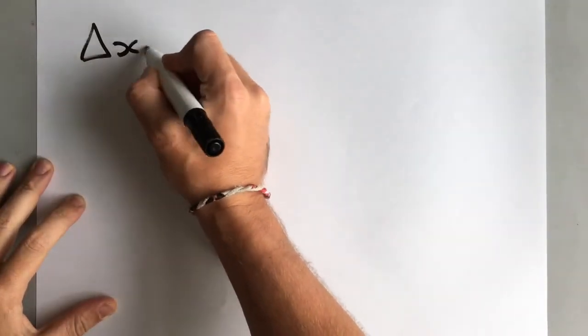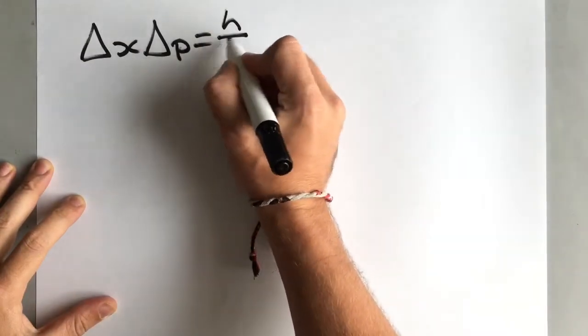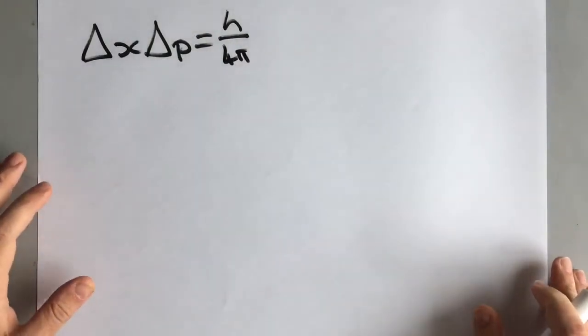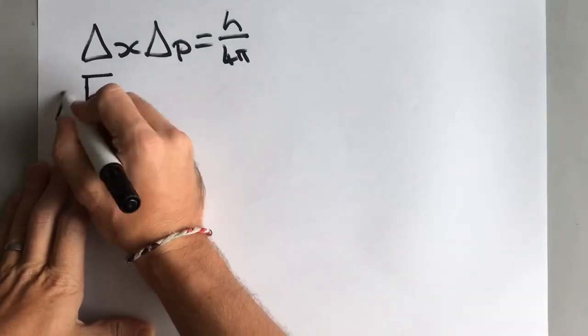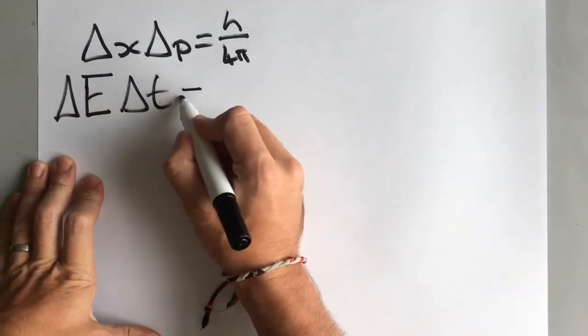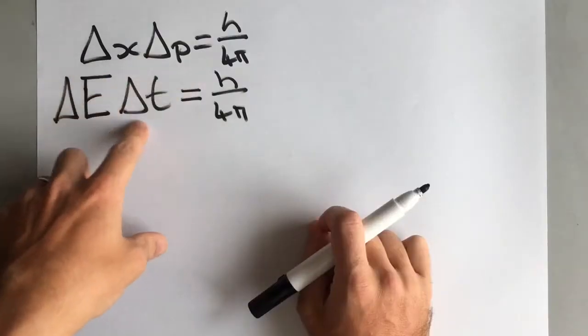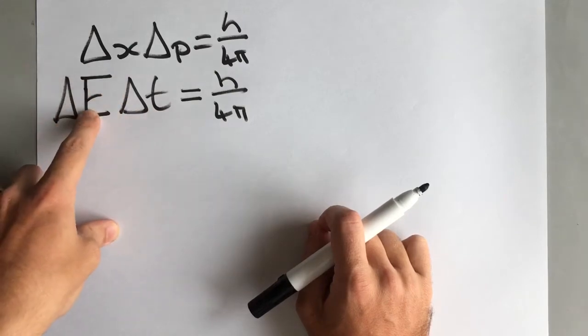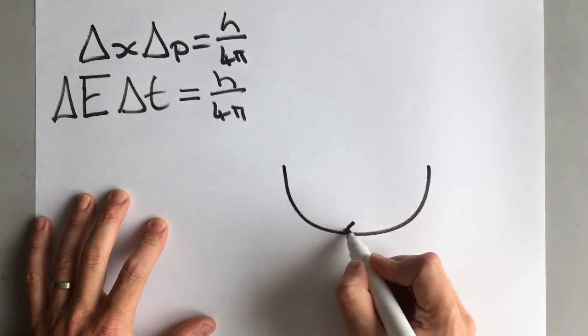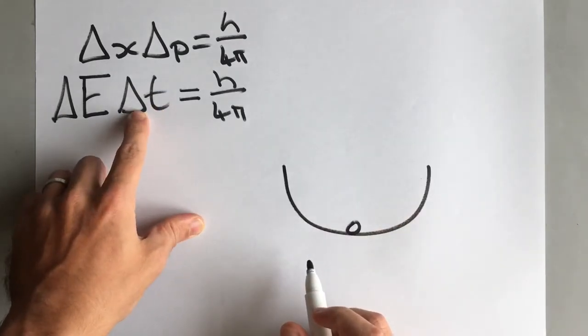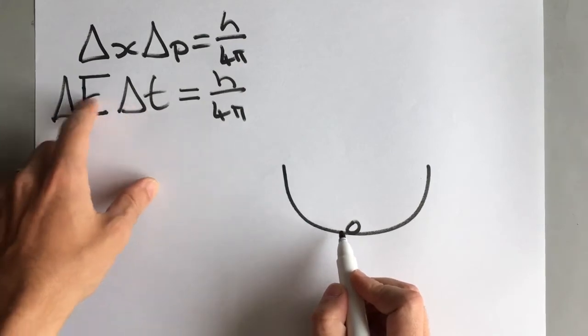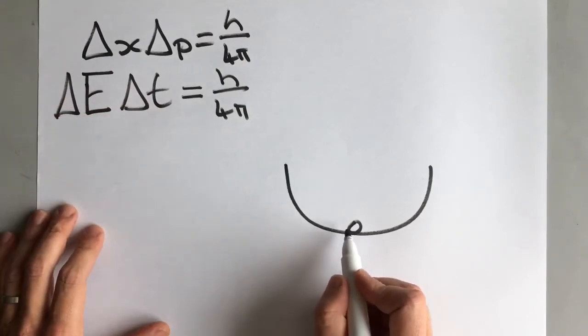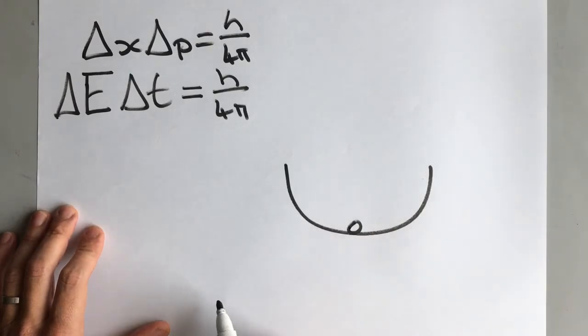However, in quantum physics, in the world of the very small, things are governed by Heisenberg's uncertainty principle. And what that means is that for a short amount of time, if our uncertainty of time is very small, then our uncertainty of energy can be very big. And so if we've got our ball in our bowl for a very short amount of time, the ball can borrow the energy from the uncertainty principle and so it can get out of the bowl.